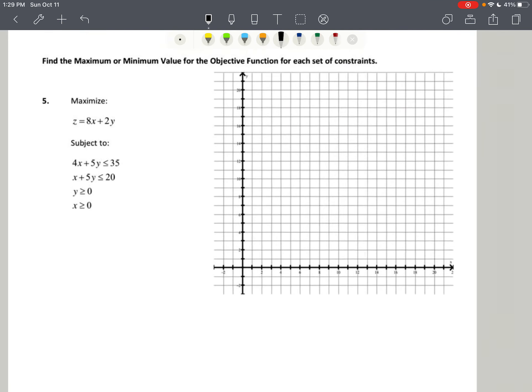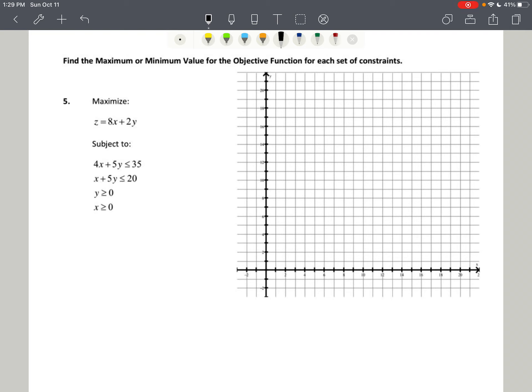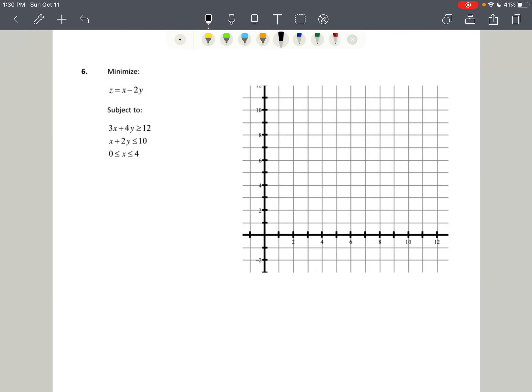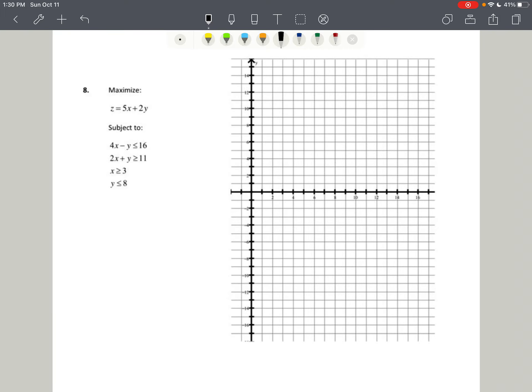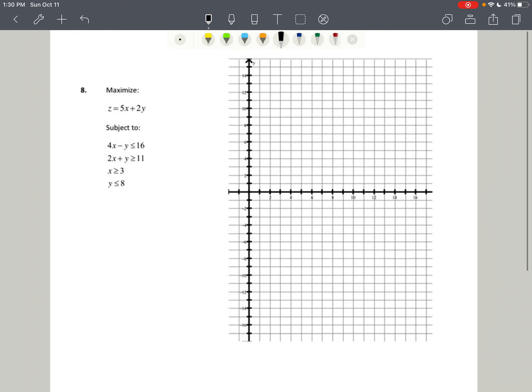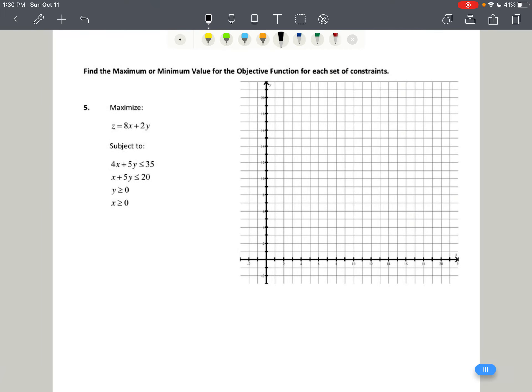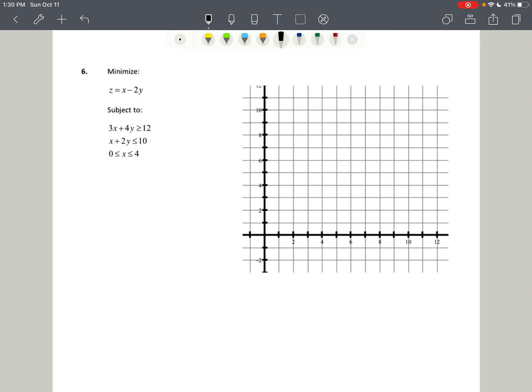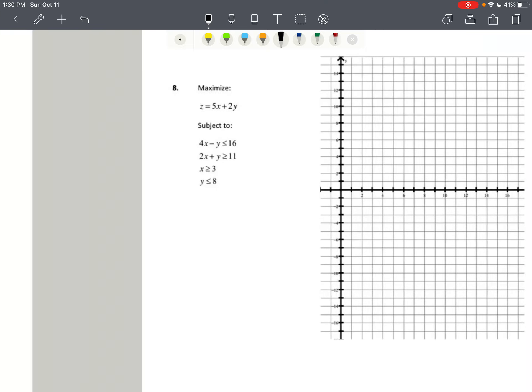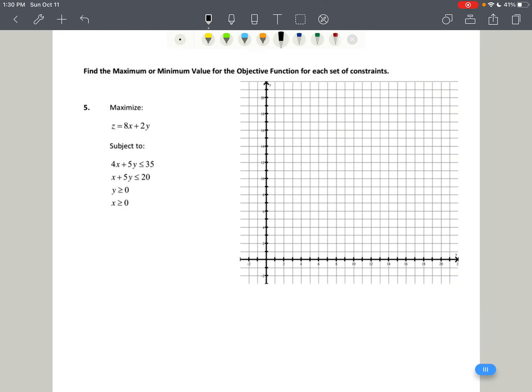So in the next video, we're going to have to create the graph ourselves. And then we'll go through and we'll maximize just one objective function for number 5. And you can see we're going to get some more practice with number 6, number 7, number 8. So we're going to be practicing graphing these problems and then going through and either maximizing or minimizing.